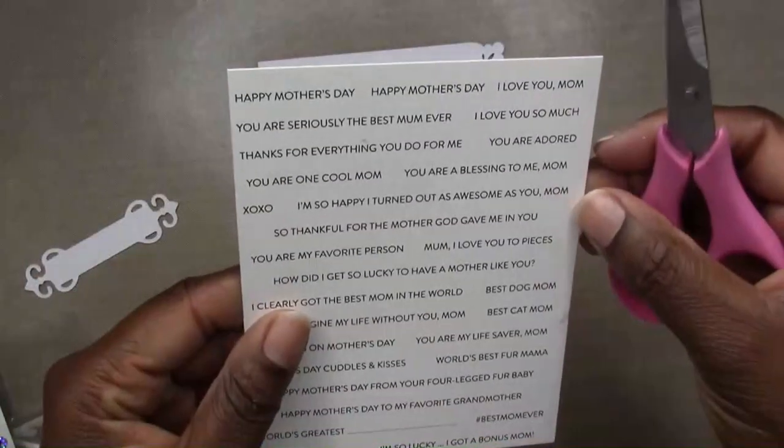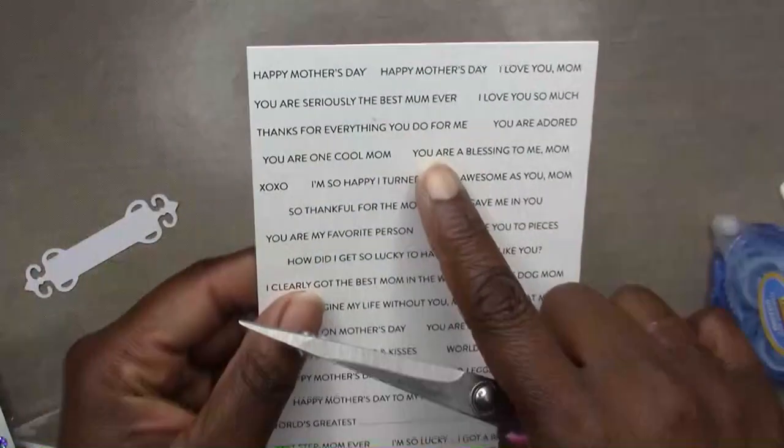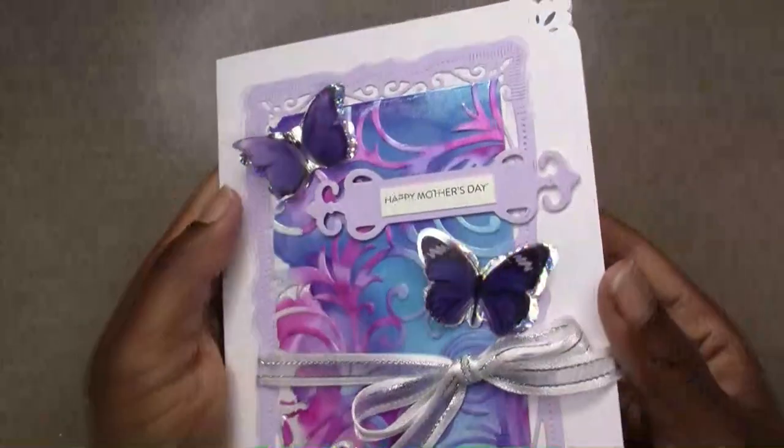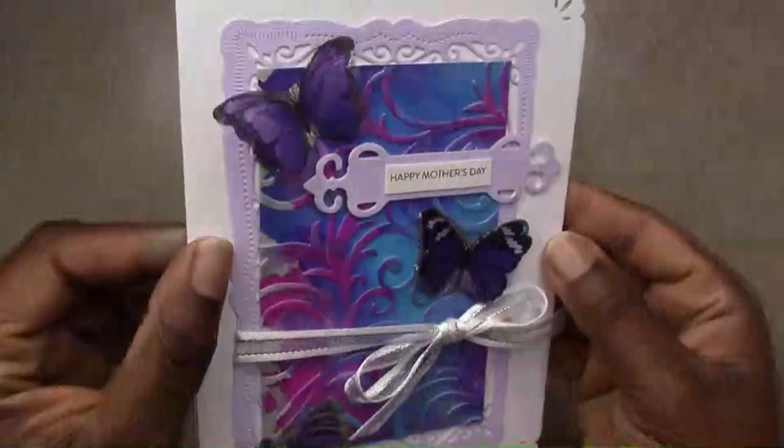I use another Spellbinders labels die and I cut out a couple of those. Then I'm taking the Simon Says Stamp pre-printed sentiments, and I'm just cutting the one that says Happy Mother's Day out, and I'm going to adhere that right on top of that label.